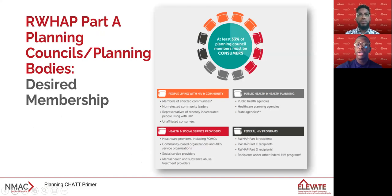The membership of planning councils is fairly prescribed in order to ensure that people with HIV who are involved in the council are able to truly participate. The membership must include people living with HIV in the community, including members of federally recognized Indian tribes as represented in the population, individuals co-infected with hepatitis B or C, and historically underserved groups or subpopulations. In fact, 33 percent of the planning council members must be consumers of Ryan White Part A services. Moreover, planning council membership must reflect the epidemic in the jurisdiction in terms of race, ethnicity, gender, gender identity, gender expression, and age, or any other factors.